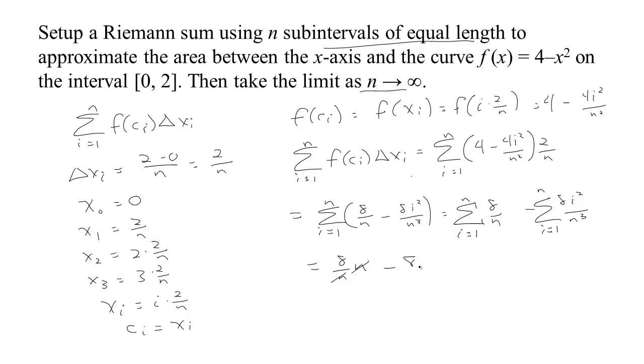Now this one I can pull out the 8 and the n³ because those don't change, and I see that what's left is the sum of the first i².